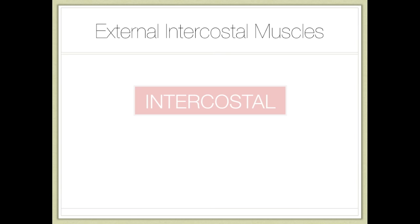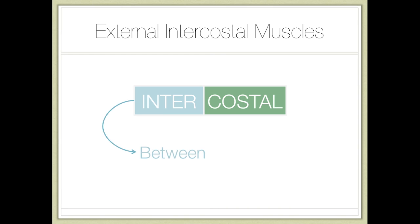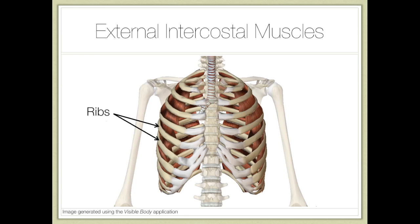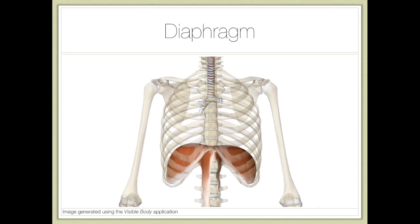If we look at the word intercostal, we can break it up into two parts: 'inter' means between, and 'costal' means the ribs. Therefore, as the name suggests, the external intercostal muscles are the muscles between the ribs.